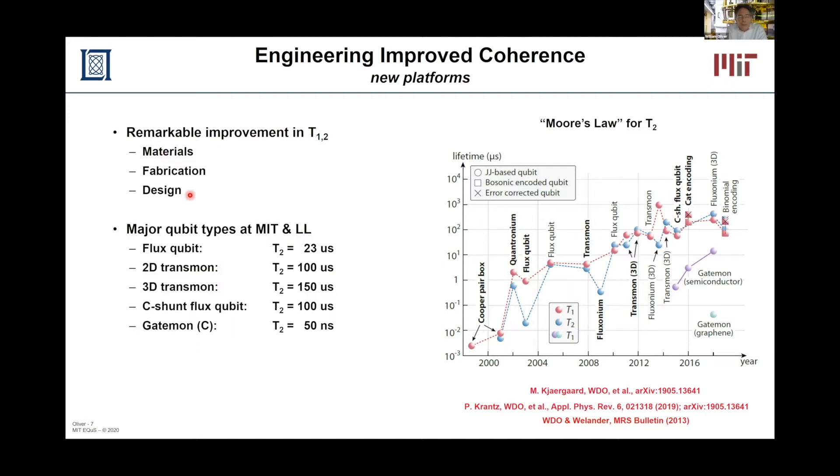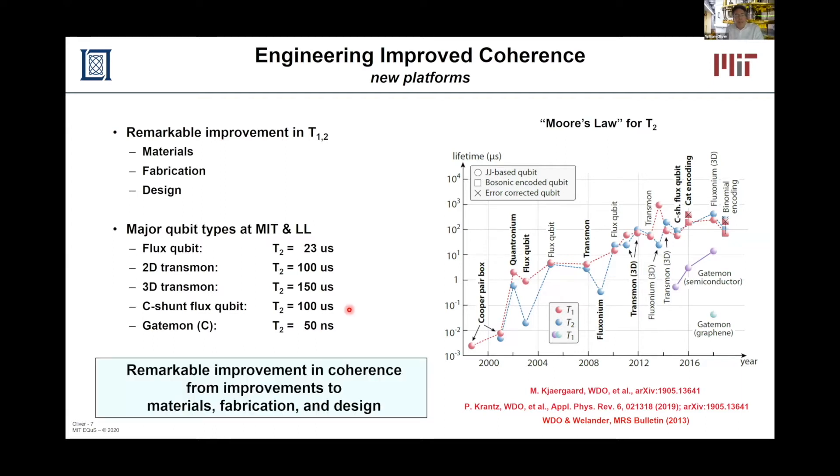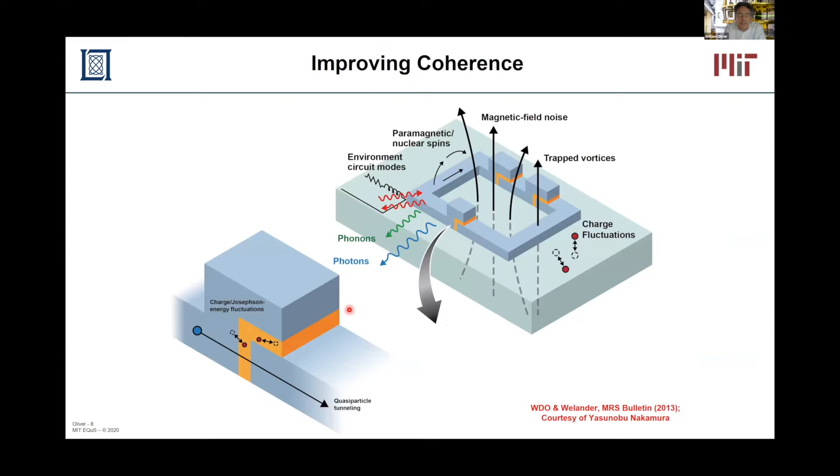Where it comes in is in the coherence time and in particular what limits the coherence time. Over the past 20 years, we've seen remarkable improvements in the fundamental metrics for coherence, T1 and T2. The first qubits were just demonstrated around the year 2000 and they had coherence times at or less than even a nanosecond. And today we have qubits that are above a hundred microseconds and even pushing up towards three or 400 microseconds. So remarkable improvement, more than five orders of magnitude. There is not one thing that we can point to that led to this remarkable improvement. It's been a combination of materials, fabrication, and design.